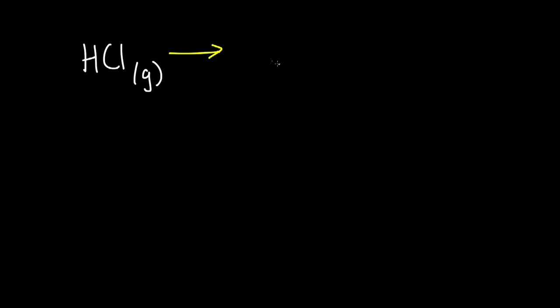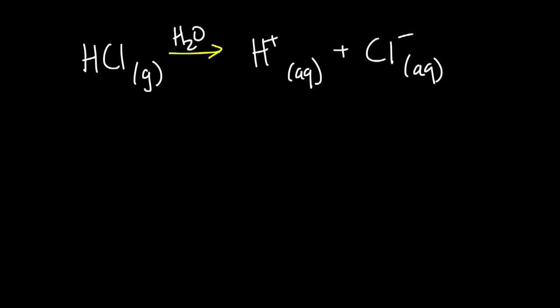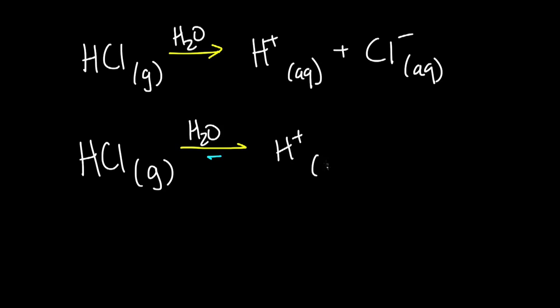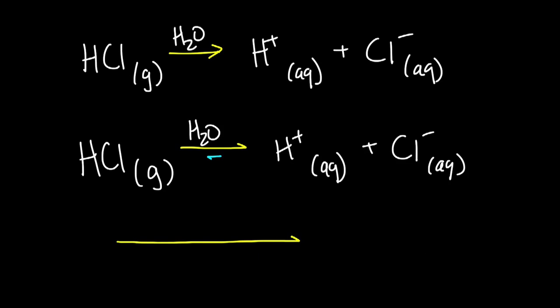For example, you've probably seen the dissociation of a strong acid in water written as just a forward reaction. But really, it's reversible. In this case, the forward reaction is many orders of magnitude faster than the reverse reaction, so we write it as just the forward reaction.